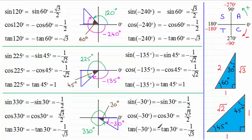So what we have are these sets of results, which I leave you to check out. I hope that's given you some idea of how we can handle these multiple angles — both positive and negative — of 30, 60 and 45 degrees.